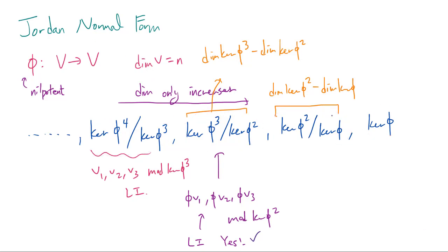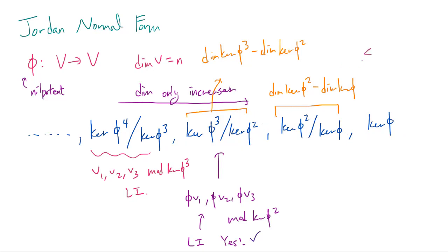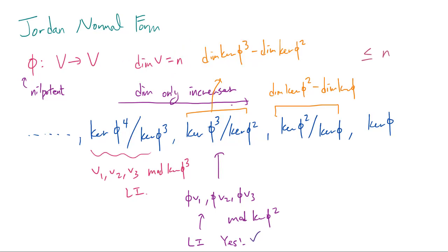If we add up the dimensions of all of these spaces, starting with kernel of phi, then the sum is going to be at most N. And that's because dimension of kernel of phi cubed is at most N, dimension of kernel of phi to the 4th is at most N, and so on. The dimension cannot be strictly less than N because phi is nilpotent — every vector is going to disappear when we apply phi enough times, so when we sum up the dimensions we should in fact get exactly N.